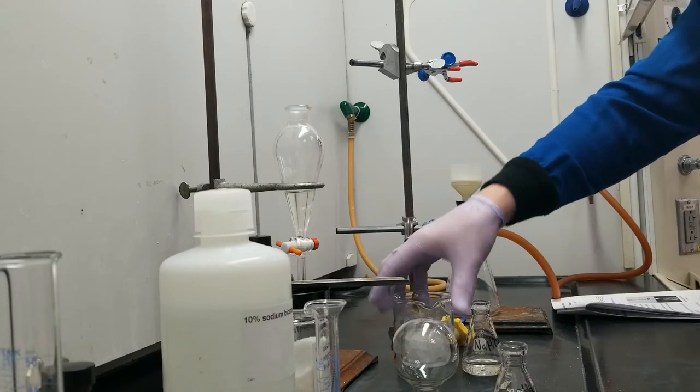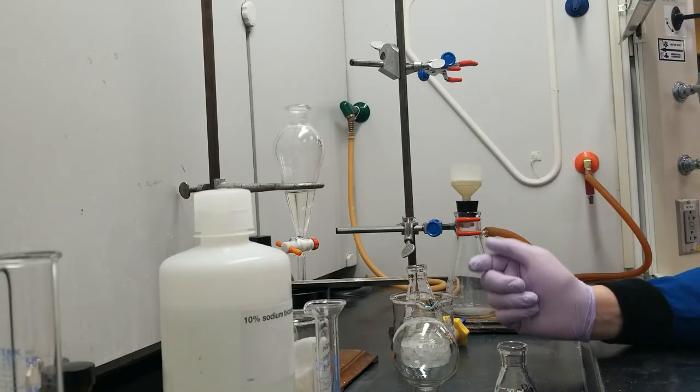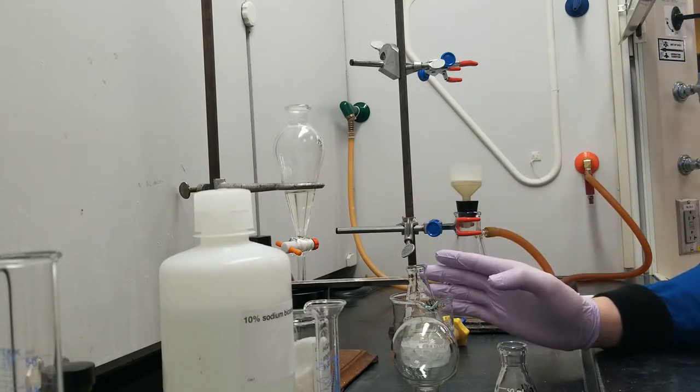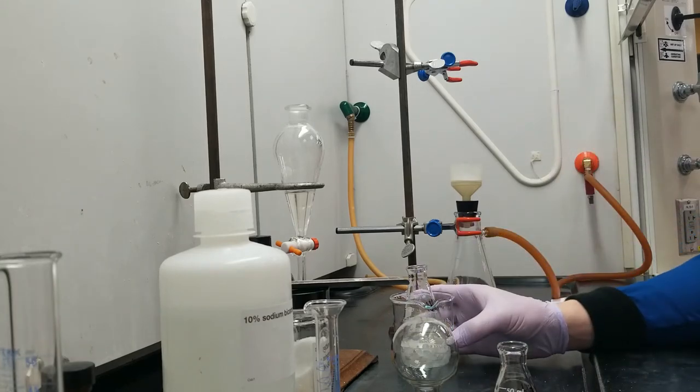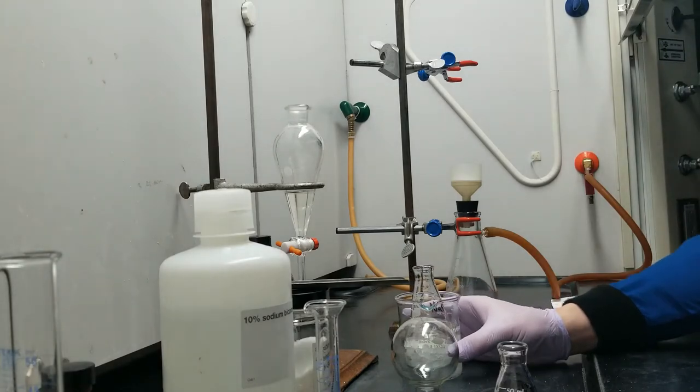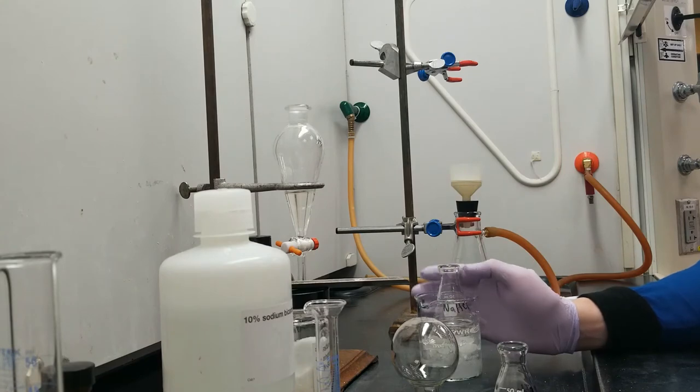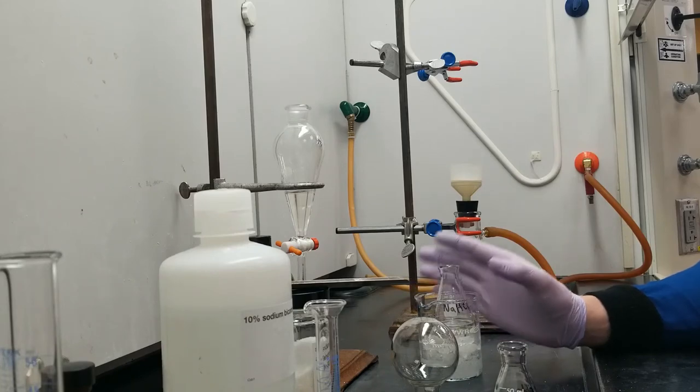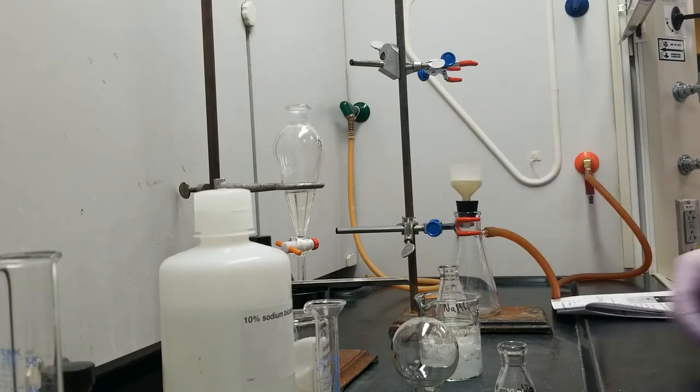So the way I want to do this is I would like to precipitate out my 3-chlorobenzoic acid by acidifying it, and then I'm going to collect it by vacuum filtration. When we re-acidify this, it's going to go from an ionic species, which is soluble in water, to a non-polar, protonated, uncharged 3-chlorobenzoic acid, which is going to be insoluble in water, so it's going to collect on itself and form solid.